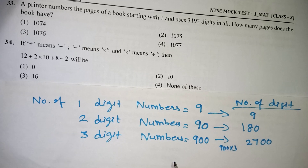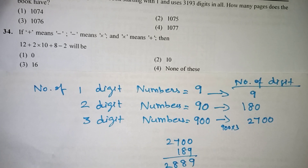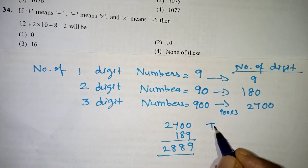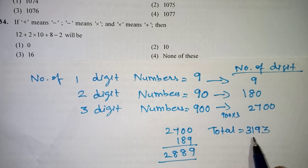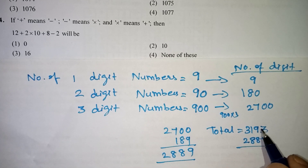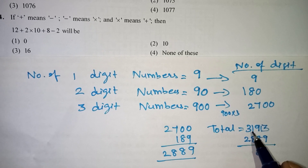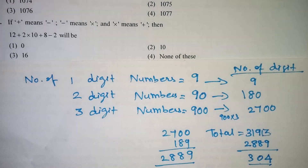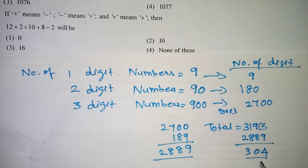Adding these up: 9 + 180 + 2700 = 2889 digits. Total digits given are 3193. So remaining digits: 3193 minus 2889 = 304. Now, the remaining pages are 4-digit numbers. So we divide 304 by 4. 304 divided by 4 gives 76 four-digit numbers.